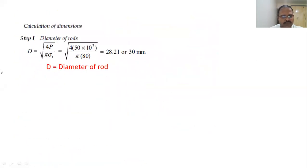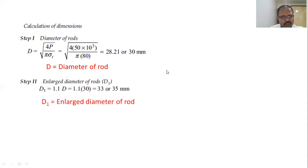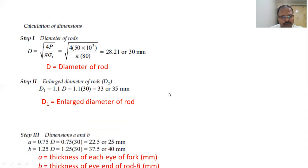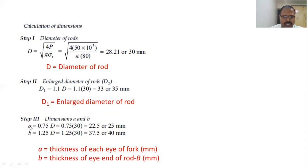First, for the tensile failure of the rods, using the stress equation we calculate the diameter of the rod as 28.21 mm, which is rounded up to 30 mm. The enlarged diameter D1 equals 1.1 times D equals 1.1 times 30 equals 33 mm, rounded up to 35 mm. A, the thickness of each fork, equals 0.75 times D, and B, the thickness of the eye, equals 1.25 times D. We calculate and round these up to the nearest values.